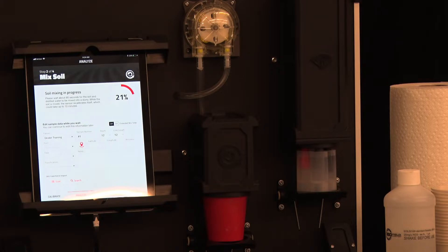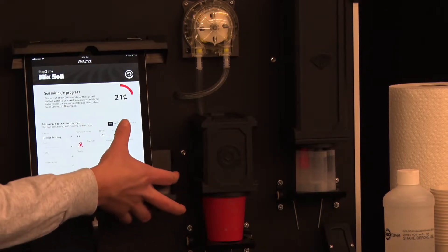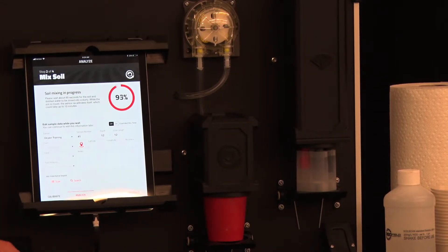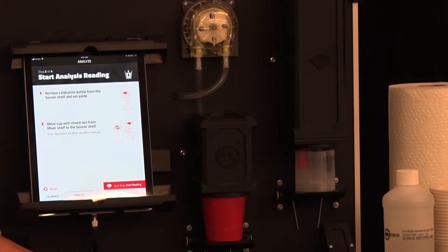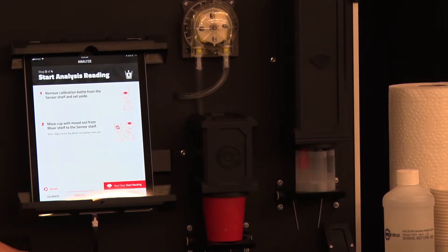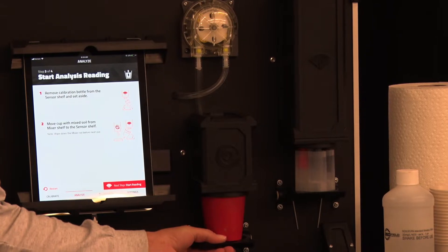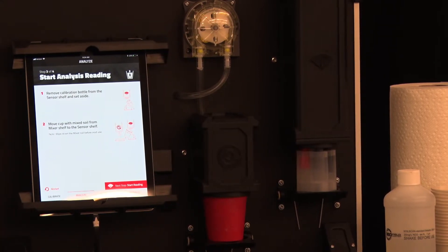If you have hard soil you may want to use the extended mix time function just by selecting on. This will allow the mixer additional time to mix the soil with the distilled water to make a slurry. When the mixer has completed mixing the next page will say start reading.